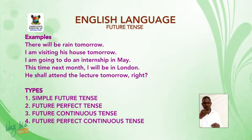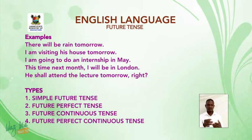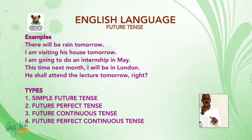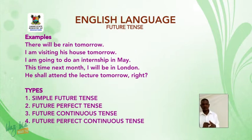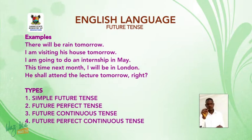There are four basic types of future tense: one, simple future tense; two, future perfect tense; three, future continuous tense; and lastly, future perfect continuous tense.